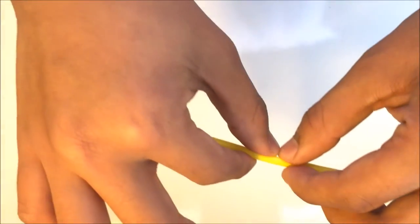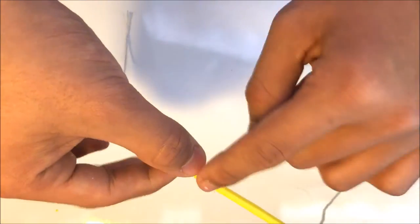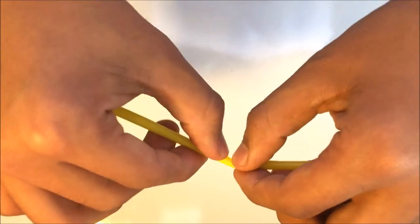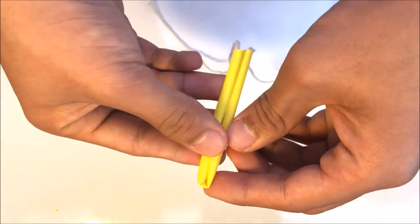And now, you're going to fold the straw, but make sure the slit is facing inwards, not outwards. You don't want to fold it this way. You want to make sure the slit is facing inwards.